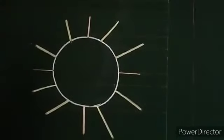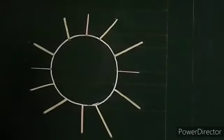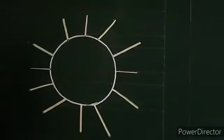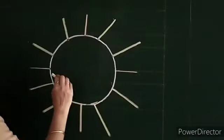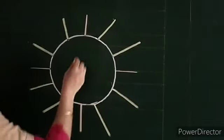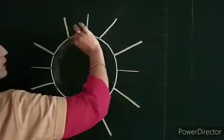Okay. Now we are going to color this sun. For this we are using yellow chalk. So color it nicely, color within the circle.